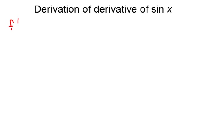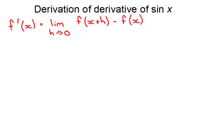We're first going to have a look at the derivation of the derivative of sine x. There are two things we need to remember as background information. The first is the limit definition of a derivative: the derivative of a function is equal to the limit as h tends towards zero of f of x plus h minus f of x, all over h.